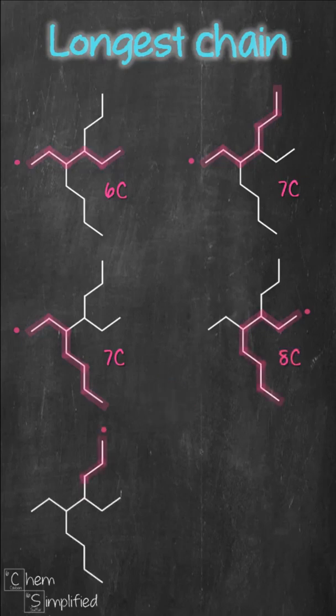And if we count from the top to the right, it gives us six carbons. What if we count from top to bottom? Looks like that will give us nine carbons, which is the longest chain.